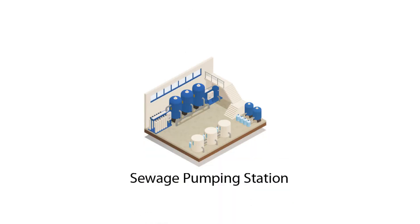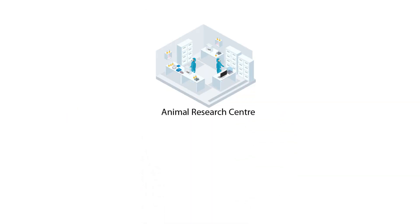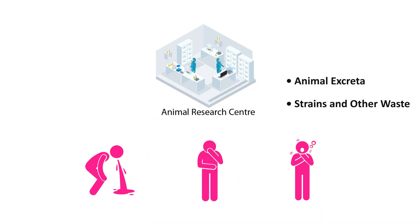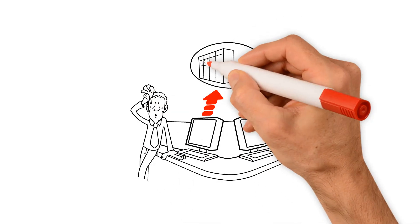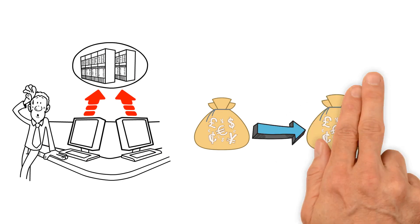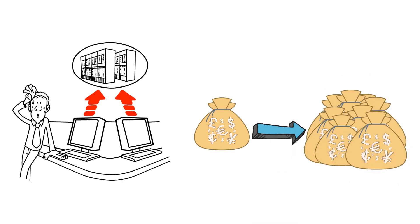In sewage treatment plants, molecular contamination of air inside sewage pumping stations or treatment plant control rooms can corrode and damage the electronic devices installed in them. Similarly, in animal research labs, animal excreta, strains and other waste generally lead to the generation of obnoxious foul odor creating discomfort for the people working inside the lab. The smallest of these failures run a risk of severe economic costs ranging from a few hundred dollars to millions of dollars in just a few hours.